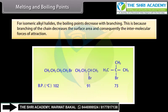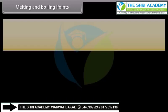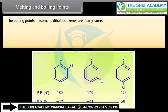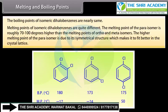For isomeric alkyl halides, the boiling point decreases with branching, because branching of the chain decreases the surface area and consequently the intermolecular forces of attraction. The boiling points of isomeric dihalobenzenes are nearly the same. The melting points of isomeric dihalobenzenes are quite different — the melting point of the para-isomer is roughly 70 to 100 degrees higher than those of the ortho- and meta-isomers. This higher melting point of the para-isomer is due to its symmetrical structure, which allows it to fit better in the crystal lattice.